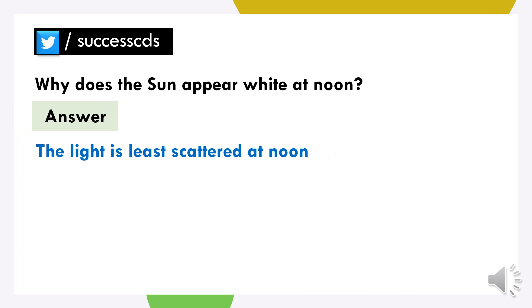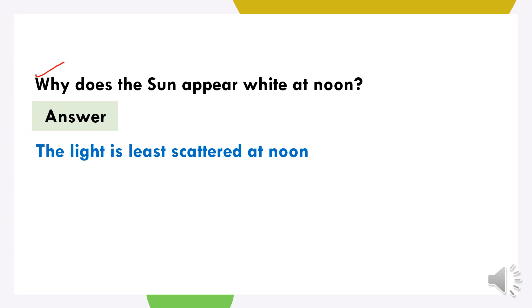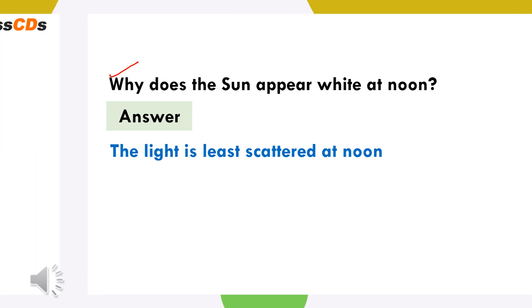The next question is: why does the sun appear bright at noon? Sun noon mein white colour ka kyun dikhai deta hai? Kyunki jo light scatter karta hai, wo least scattered hoti hai noon ke time pe.